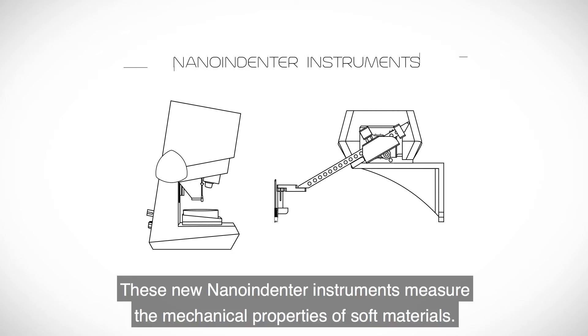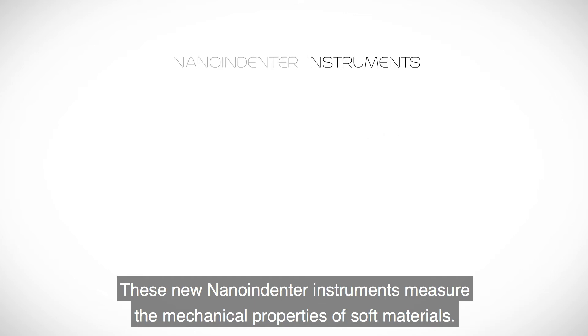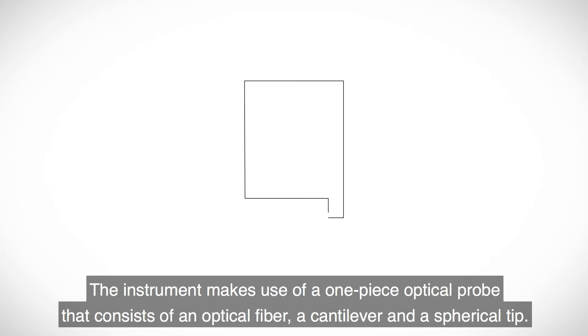These new nano-indenter instruments measure the mechanical properties of soft materials. The instrument makes use of a one-piece optical probe that consists of an optical fiber, a cantilever and a spherical tip.